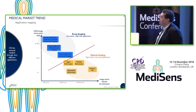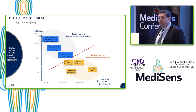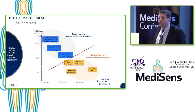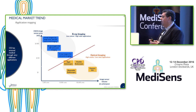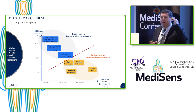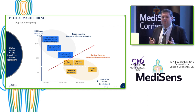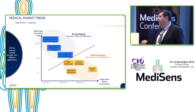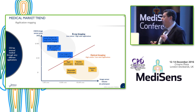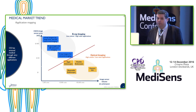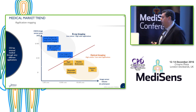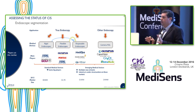Going to the market — for CMOS image sensors there are differences when we segment. All X-ray related applications are very low volume, but given the size of the sensor, X-ray FPD CMOS sensors have a higher average selling price. For endoscopes, we have more units — still in the medical imaging range, not mobile phones — but the CMOS sensor value is really cheap, in the range of $7 to $8.